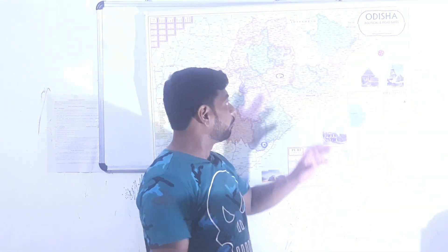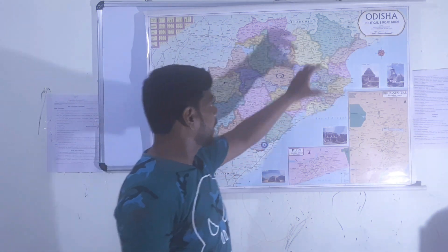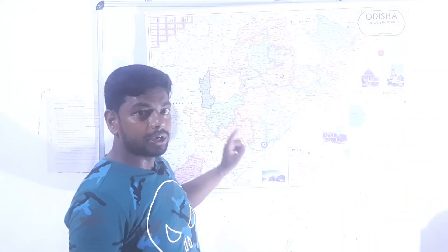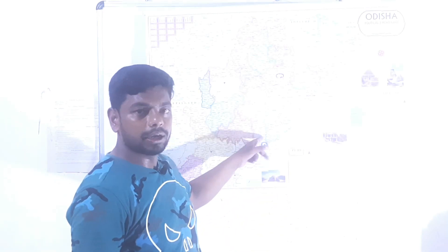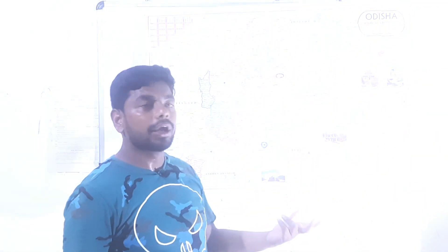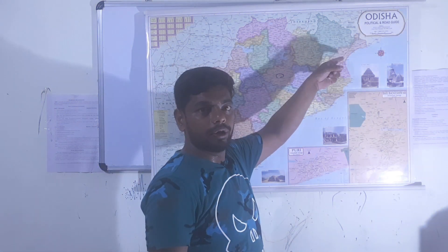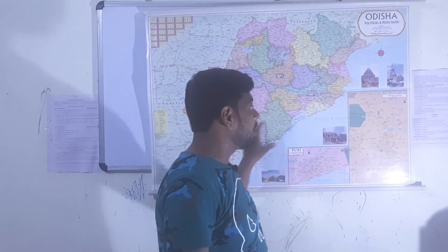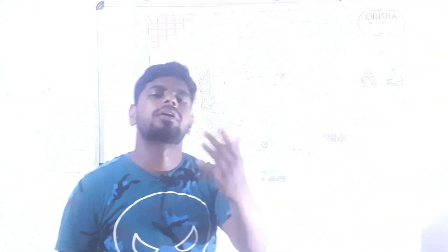To summarize the coastal plain: the narrowest part is the Ganjam Coastal Plain, the widest is the Middle Coastal Plain, and the Northern Coastal Plain is narrower. In the coastal plain, there are a number of ports — both major ports and non-major ports.